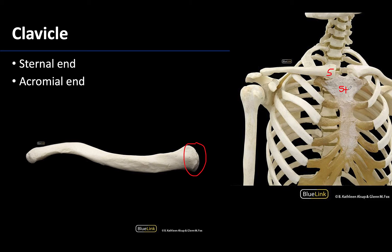It also has an acromial or lateral end, which appears more flattened in comparison to the medial end, and this is going to articulate with the acromion of the scapula.